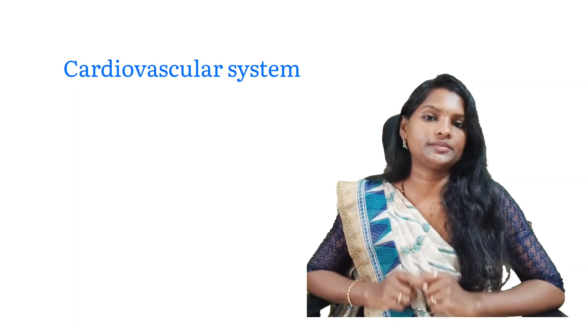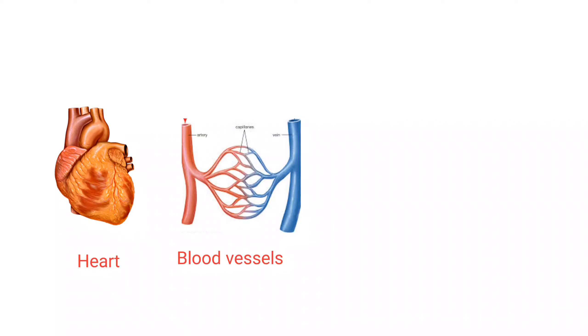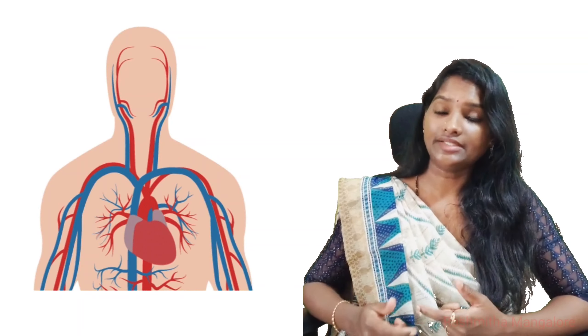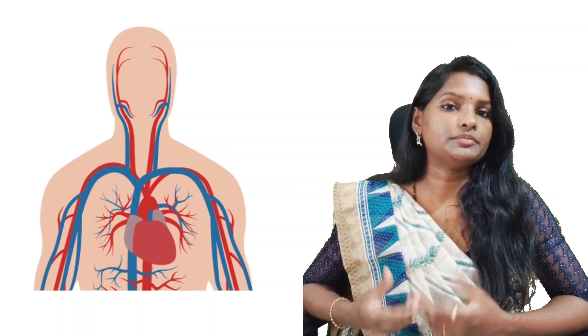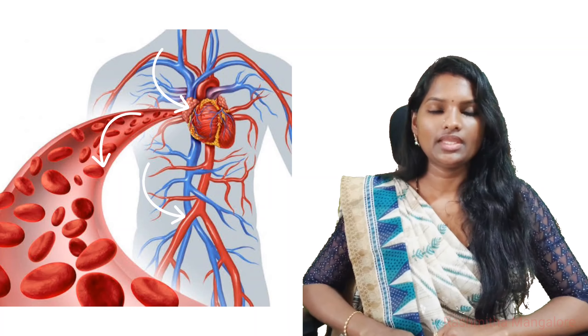Welcome to this video on the circulatory system in the human body. The circulatory system is also called the cardiovascular system, as it involves the heart and the blood vessels. It has a very important role to play, as it circulates the blood and transports essential gases, glucose, vitamins, minerals, hormones, and more to and from the cells. The essential components of the circulatory system are the heart, blood, and the blood vessels.